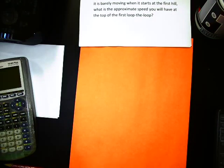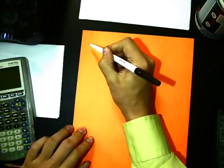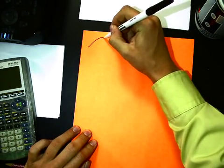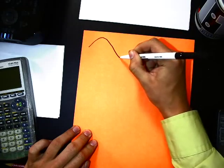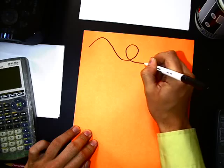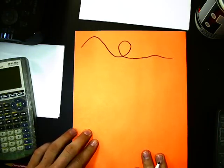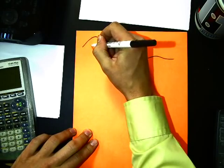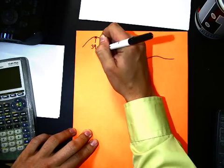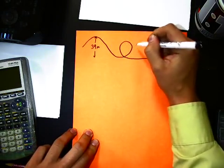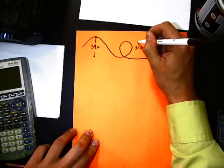First, we'll draw a little picture to kind of sort things out a little bit. So we have a roller coaster. You know, it's going up. And then it goes down. Big loop-de-loop. And it goes on, does whatever it does. So we know that the height of this is 39 meters.